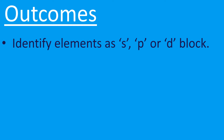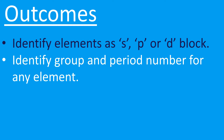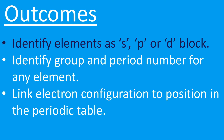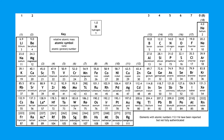Hopefully you can now identify elements as s, p, or d block. We're now going to move on to looking at group and period numbers for any element, and linking the electron configuration to the position in the periodic table. Back to the periodic table — let's look at fluorine as an example.